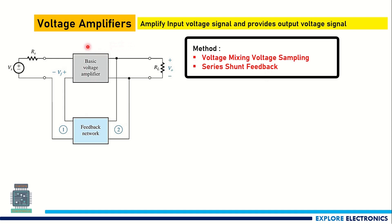Here there is an amplifier circuit with a feedback network. While providing the output signal to the input of the feedback network, how we take the signal is called sampling. We are sampling this output voltage signal in a shunt way — meaning in parallel — and that signal is given to the feedback network. That's why the name shunt comes here, and we call it voltage sampling.